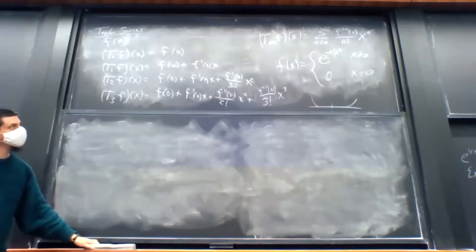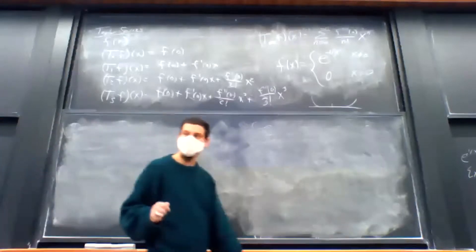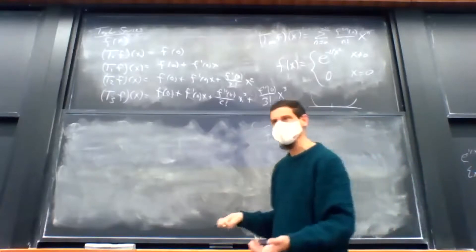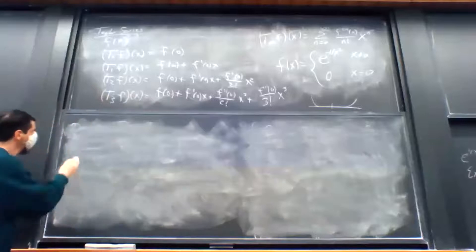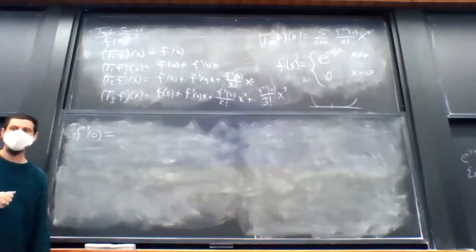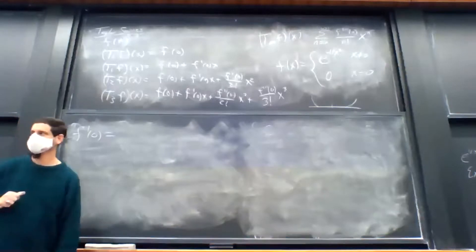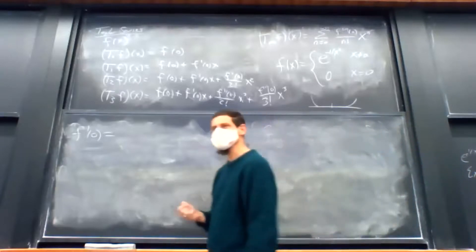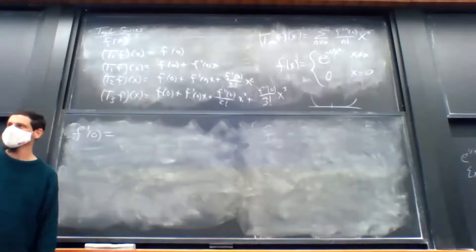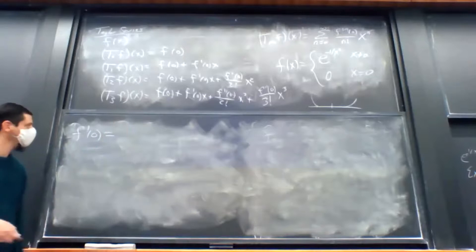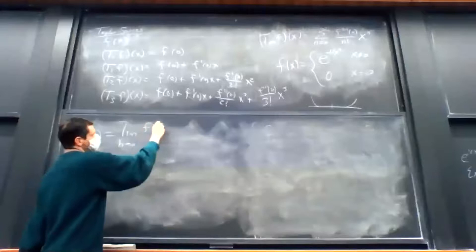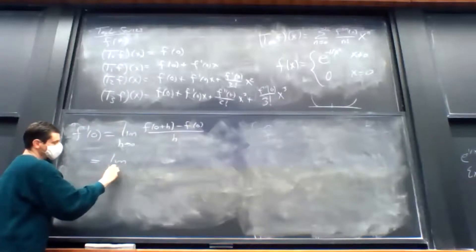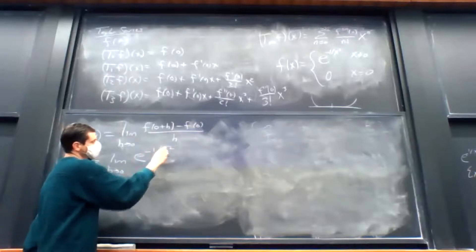A student asks: wouldn't this function not be differentiable at zero? Good question — we need to prove it's differentiable. It has a split definition, so I can't just take the derivative of each piece; I have to go back to the limit. The derivative at zero is the limit as h → 0 of [f(0+h) − f(0)]/h, which equals the limit as h → 0 of e^(−1/h²)/h. This is a 0/0 indeterminate form.